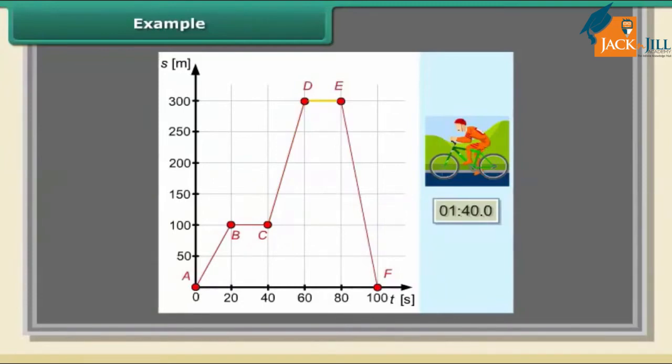Segment DE shows the cyclist stopped for 20 seconds. Then from segment EF we can discover that the cyclist turned back and after 20 seconds reached the location where he started his journey. He was moving with a constant speed of 15 meters per second.